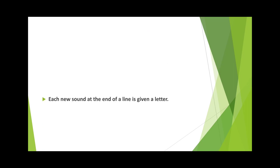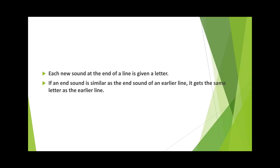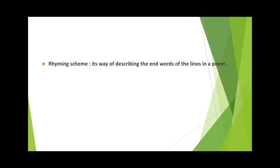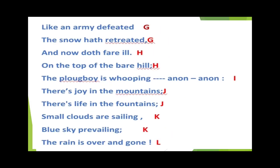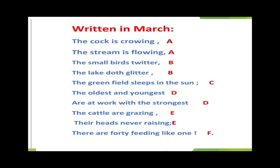So students, I hope that you have well understood rhyming words and rhyming scheme, and that you can find out the rhyming scheme and rhyming words from any other poem you will read in future. At last, I want to remind you of the rhyming words we found in this poem: crowing and flowing; teeter and glitter; youngest and strongest; grazing and raising; defeated and retreated; ill and hill; mountains and fountains; sailing and prevailing. These are our rhyming pairs of words.